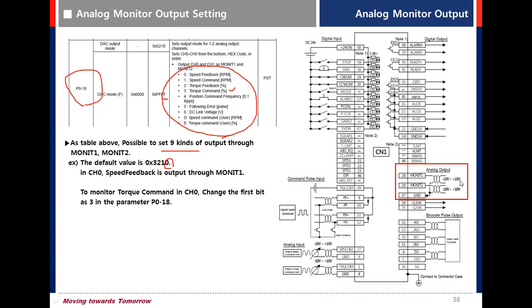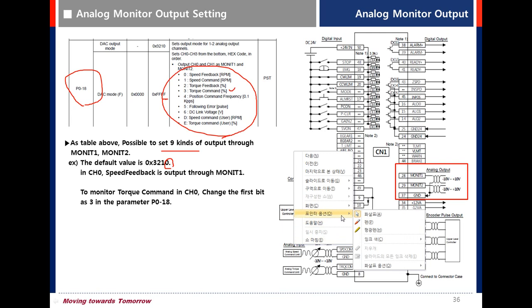You can also change the range to 0 to 10 volts by changing parameter P017.